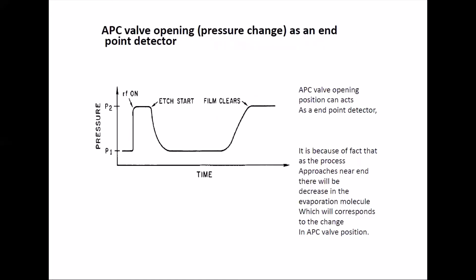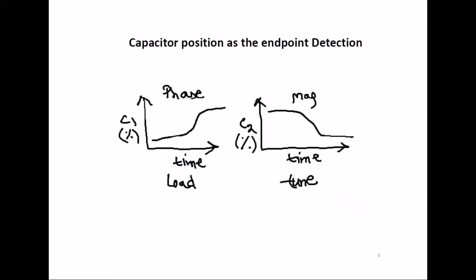Basically you can look for DC bias, the APC wall position or the pressure in the chamber. They will give you an endpoint detection which is the cheapest one, but you have to observe very carefully. Thank you.